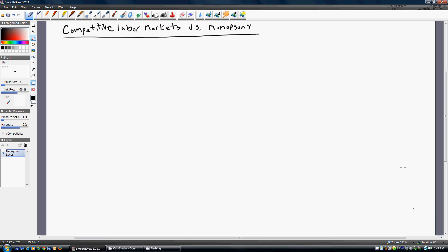Hello. This video will show you the difference between competitive labor markets and a monopsony labor market. In a competitive labor market, there are many buyers and many sellers of labor. Under monopsony, in the pure form, there is just one buyer of labor.